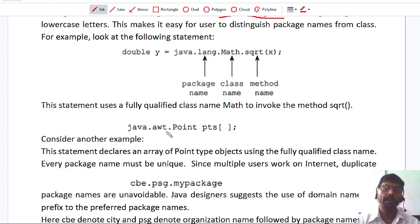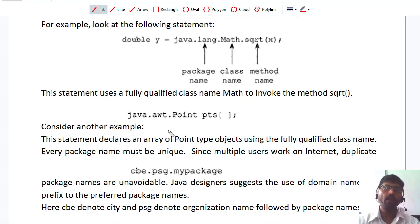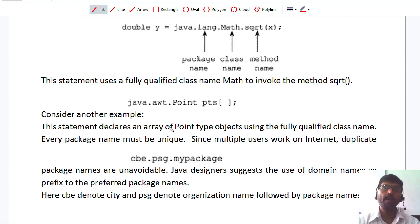In similar way, one more example is given here. If I want to create some points, I want to draw some points on a canvas or a graphical user interface, then I need some points that can be created by using a class called as Point class. This Point class is available in java.awt package. It will create here array of points. So java.awt is a package and this is a class and this is an array.